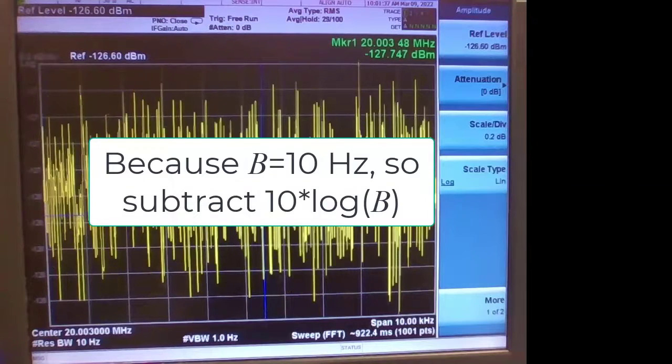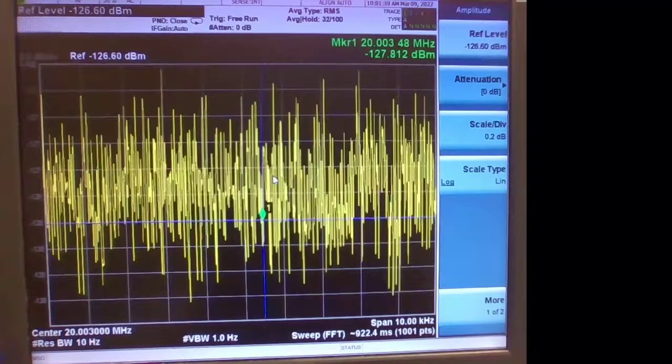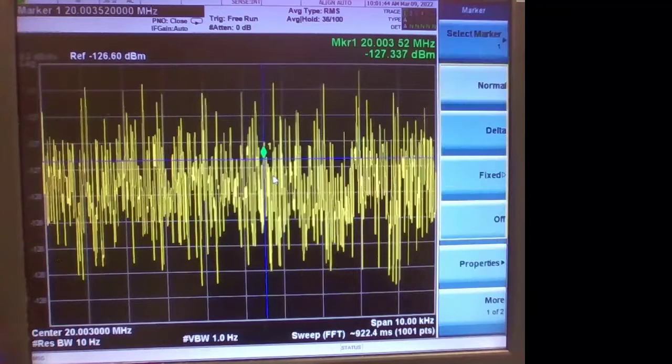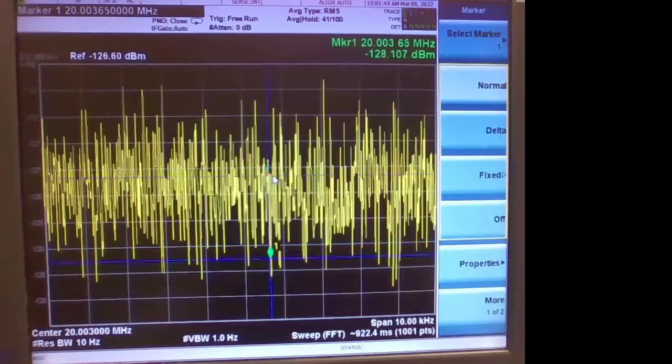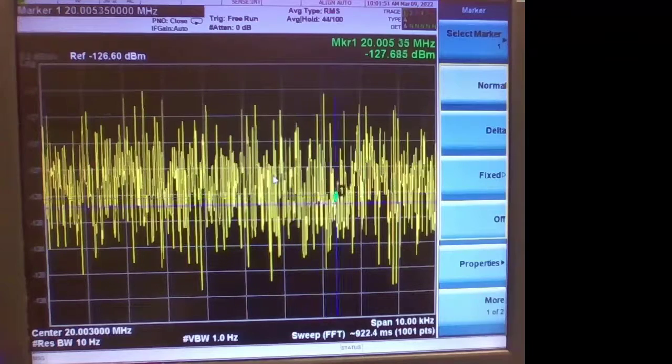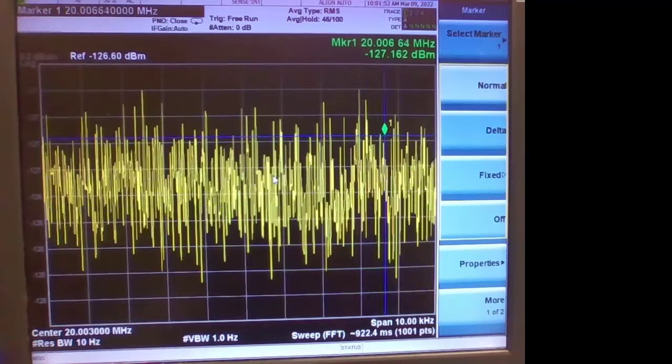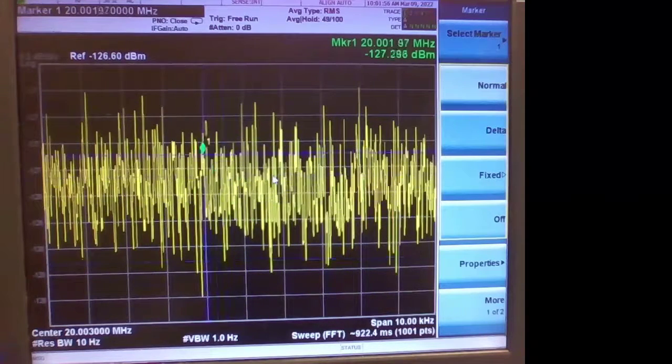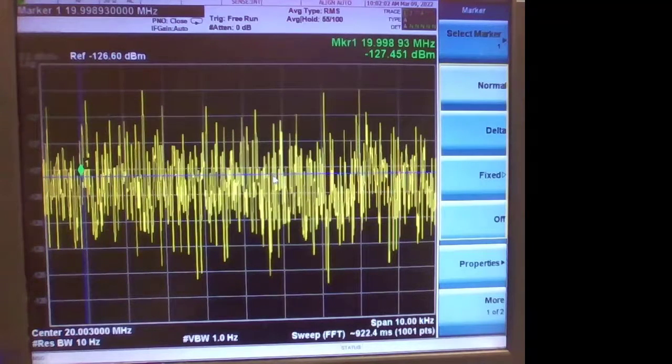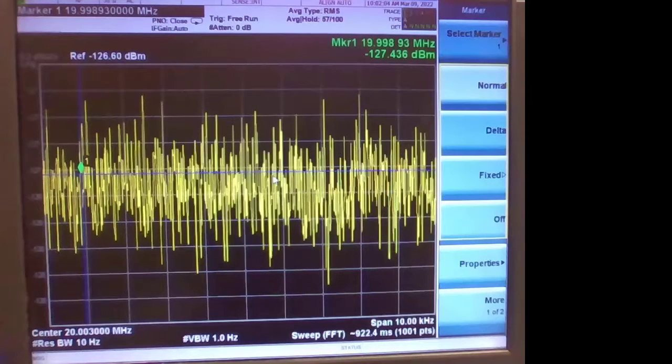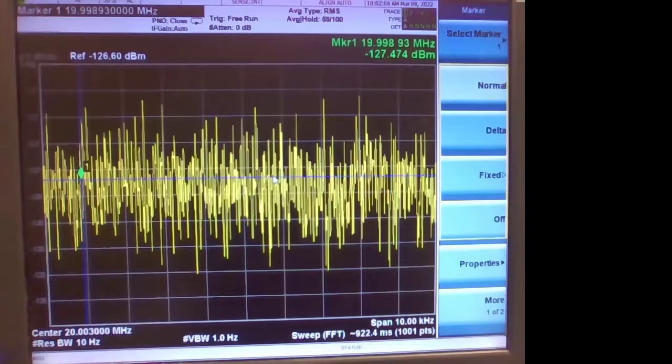Remembering that we're on 0.2 decibels per division, already after 35 averages we're better than we were with the resolution bandwidth at only one Hertz. So it does help to set the resolution bandwidth higher. I still have minus 127.5, subtracting 10 from it to account for the 10 Hertz resolution bandwidth, that's B in the equation. So there's really no difference but it's a little cleaner and easier to see.